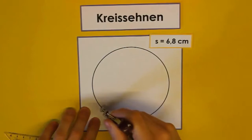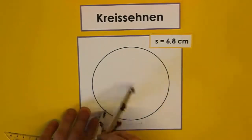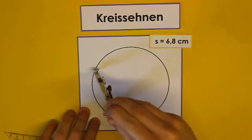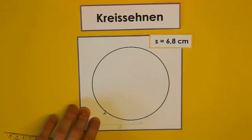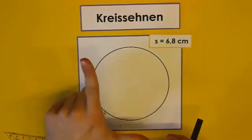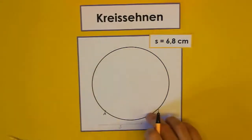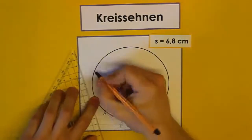Und jetzt stechen wir beim Punkt A mit der Zirkelnadel ein und schlagen auf der Kreislinie ab. Achtung, es gibt immer zwei Möglichkeiten, wie ihr sehen könnt. Also ich kann hier oben und ich kann unten abschlagen. Zeichnet immer beide Möglichkeiten ein, es sei denn, es ist in der Angabe wirklich explizit nur eine einzige Kreiszehne gefragt. Dann könnt ihr selbst abschlagen, wie ihr wollt.